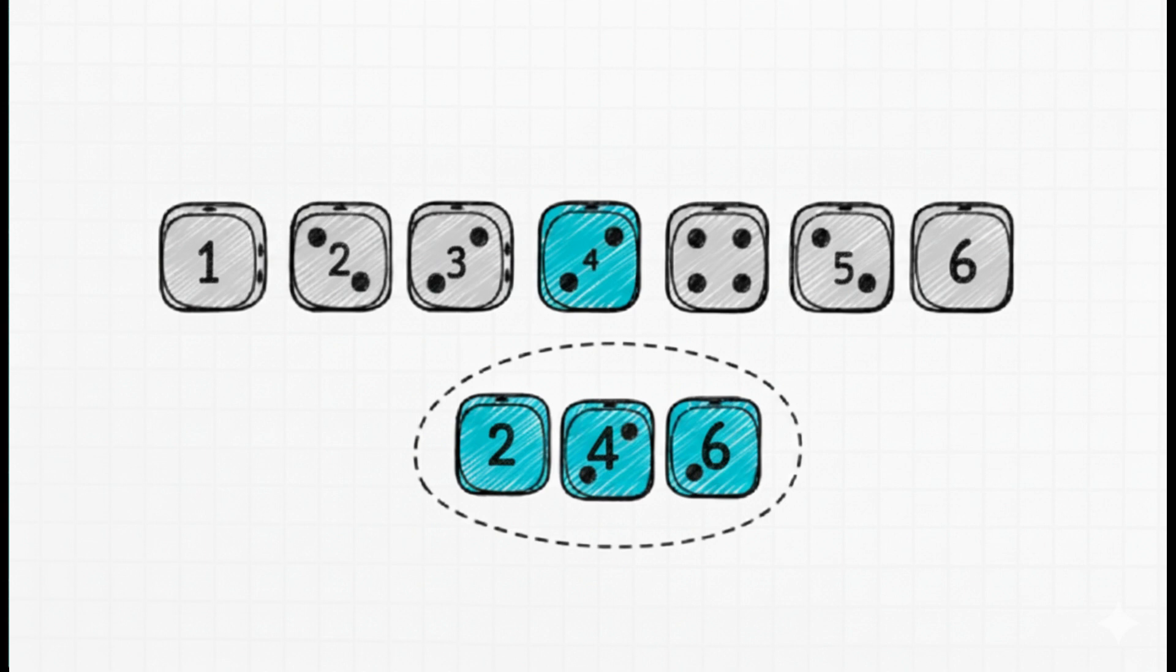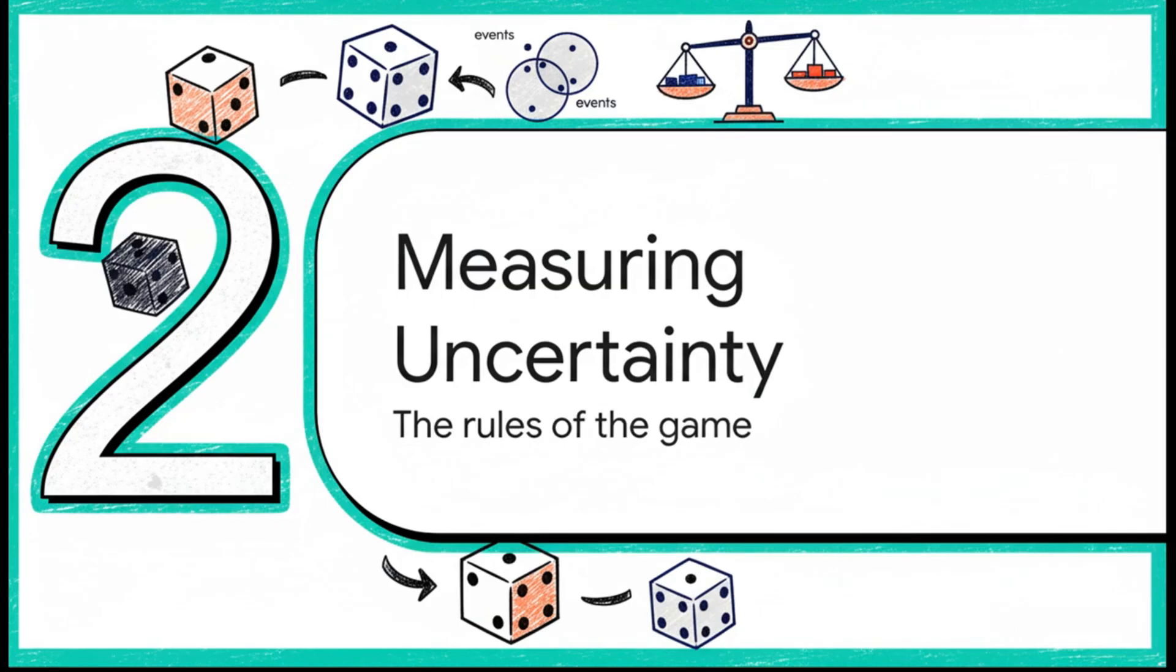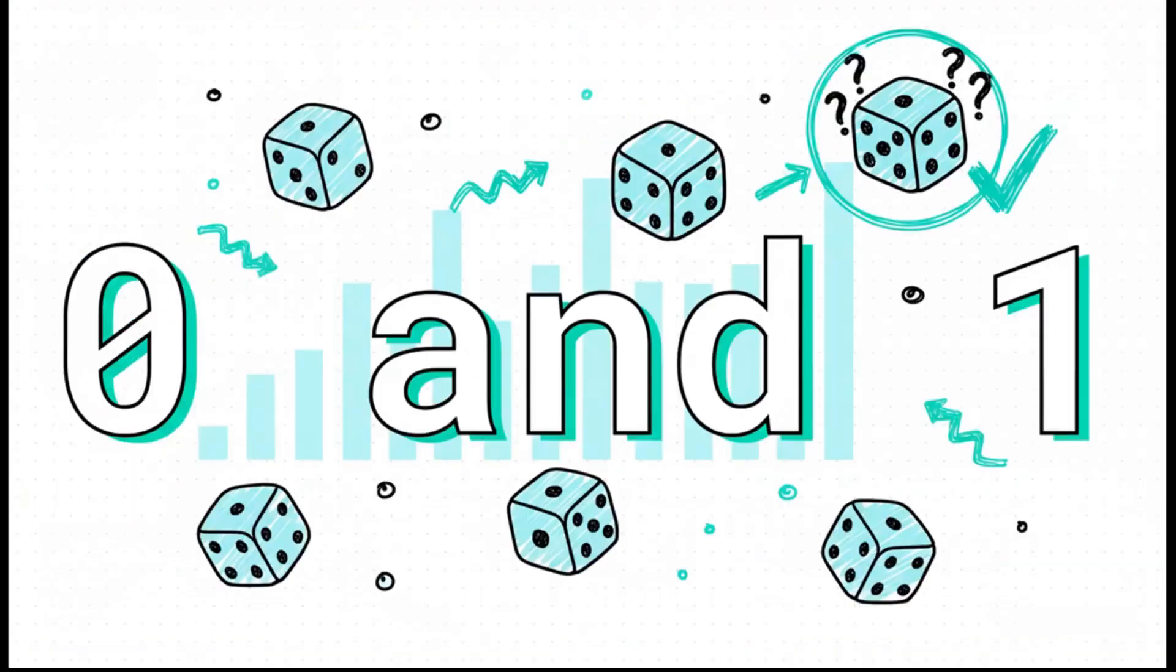Okay, we've got the language down. We have experiments, sample spaces, and events. Now we get to the fun part, actually putting a number on that uncertainty. Let's dig into the rules of the game. And the first, most fundamental rule is this one. Probability is always a number somewhere between 0 and 1. Always. 0 means it's absolutely impossible. It cannot happen. 1 means it's a sure thing. It is absolutely certain to happen. And pretty much all of life's interesting maybes falls somewhere on that scale in between.